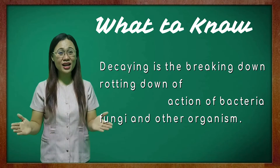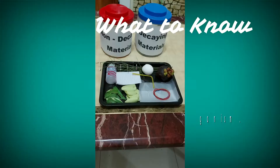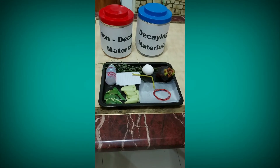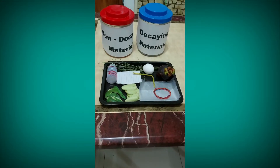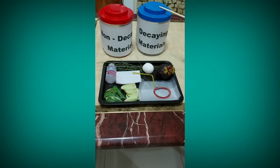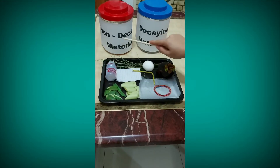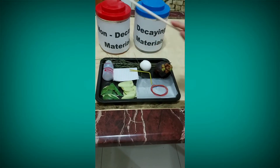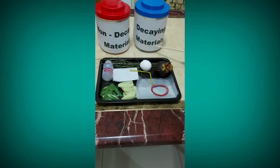Now class, let's start the experiment. Here are the materials that we're going to use in this activity. Prepare two jars — label one 'non-decaying materials' and the other 'decaying materials.'